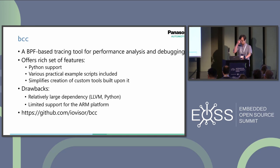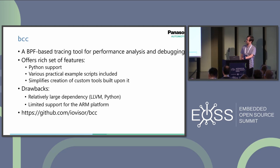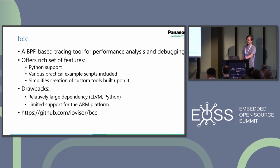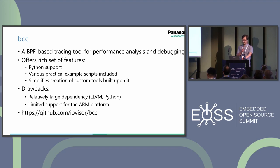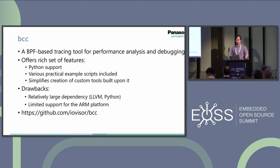Next is BCC, which is a BPF-based tracing tool designed for performance analysis and debugging. BCC offers a rich set of features, including Python support, various practical example scripts, and the ability to simplify the creation of custom tools built upon it. However, there are some drawbacks, including its relatively large dependency on LLVM and Python, which may not be ideal for some embedded use cases. Additionally, BCC has limited support for the ARM platform. Unfortunately, we were unable to use some useful scripts in BCC, such as KVM exit, due to platform dependencies.